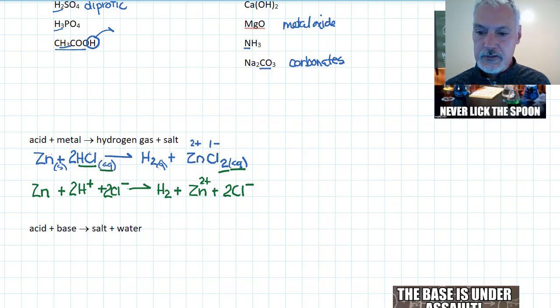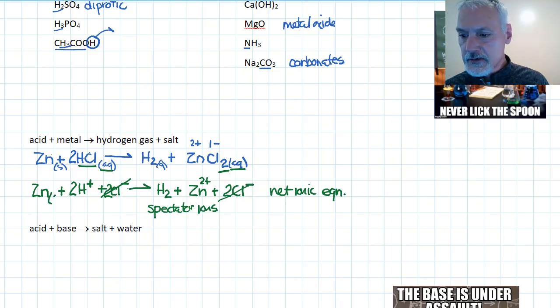Substances which are common to both sides are called spectator ions. And these can be removed from the equation without affecting the overall reaction. This provides a simplified view of the reaction of what's going on. And this is called a net ionic equation. To finish it off, I'll put in the states. Zinc is a solid. The hydrogens are ions in water. This was a gas. And this was aqueous.